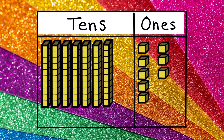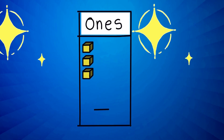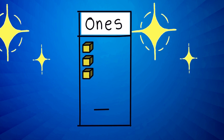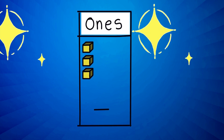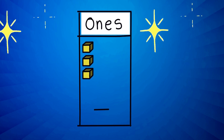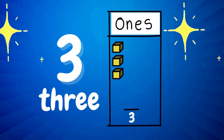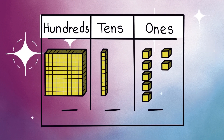Next number. It has two digits: seven tenths and eight ones. What is it? Say it with me! Seventy-eight! Good job! This number has one digit: zero tenths and three ones. Which number is it? Number three!